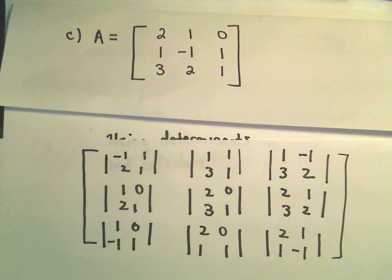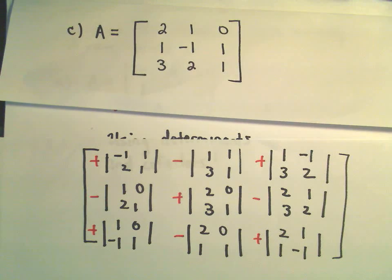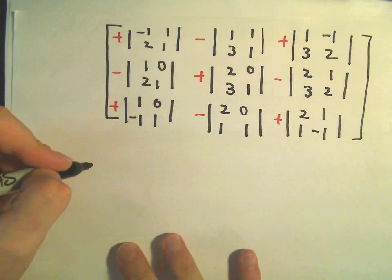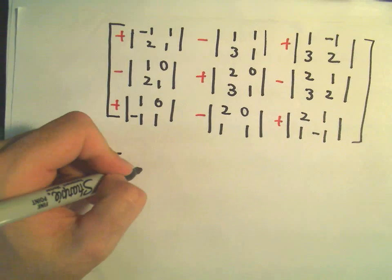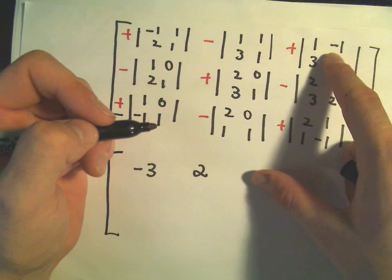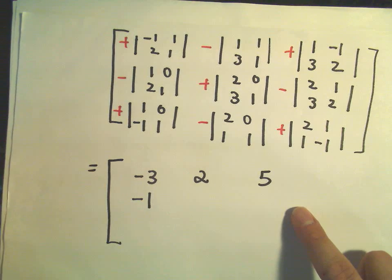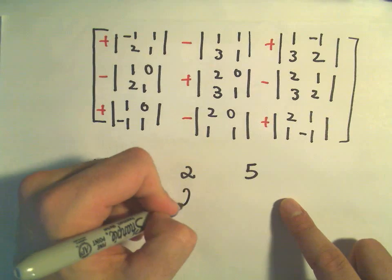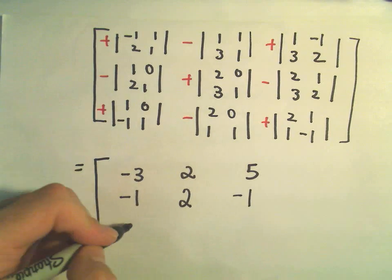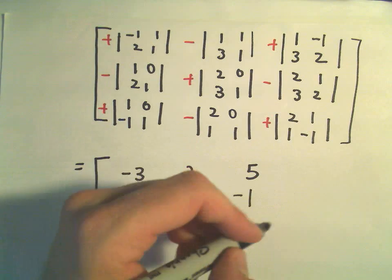Filling in the signs — positive, negative, positive, negative, positive, negative, positive, negative, positive — and simplifying the 2x2 determinants: we get negative 3; then negative 2 with an extra negative makes positive 2; then 2 plus 3 = 5; then 1 minus 0 = 1, with extra negative gives negative 1; then 2 minus 0 = 2; then 4 minus 3 = 1, with negative gives negative 1; then 1 minus 0 = 1; then 2 minus 0, with negative gives negative 2; and finally negative 2 minus 1 = negative 3.